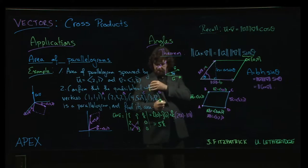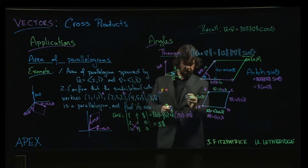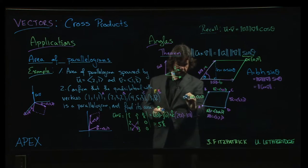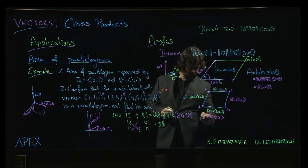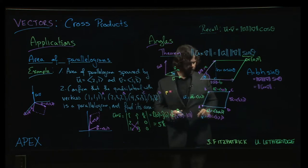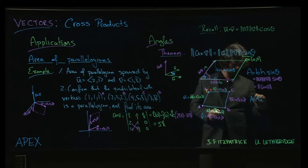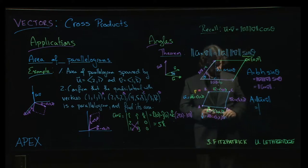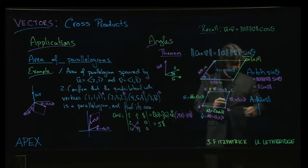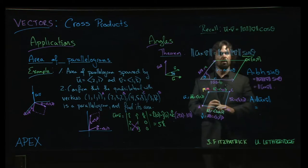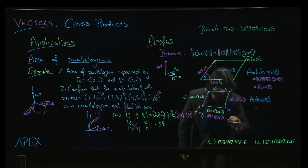And so the area is going to be the magnitude of this u cross v. Before we can calculate the magnitude, we first need the cross product. So let's go down here. What is u cross v?